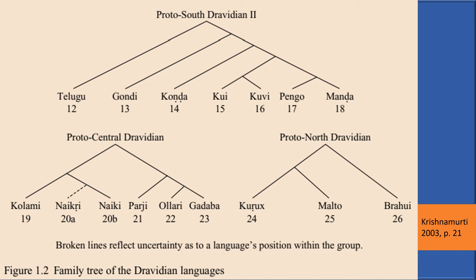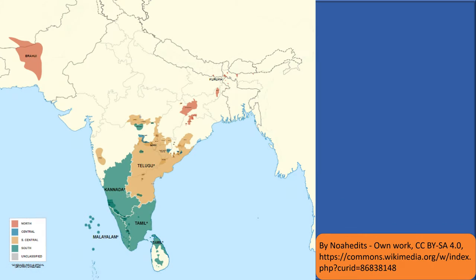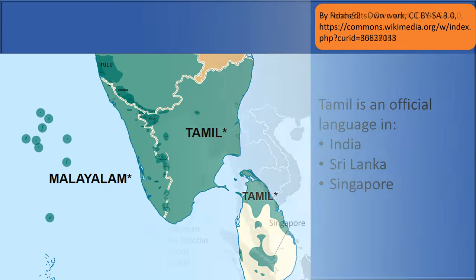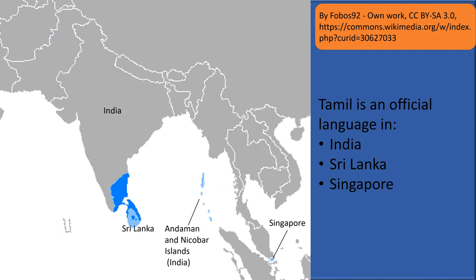The theorized lineages of Proto-South Dravidian 2, Proto-Central Dravidian, and Proto-North Dravidian from Krishnamurti 2003 are shown here. This is a map showing the geographical areas where the various Dravidian languages are typically spoken and are native to. Tamil is most commonly spoken and is native to Sri Lanka and southern India. In addition, Tamil is an official language in these two countries, along with the country of Singapore.